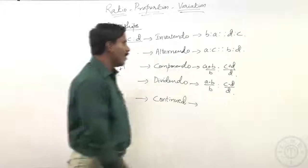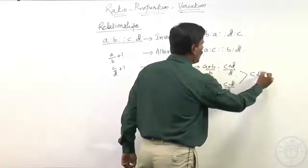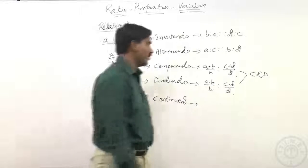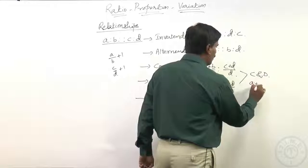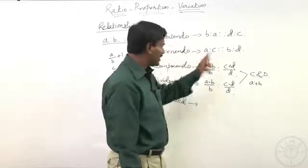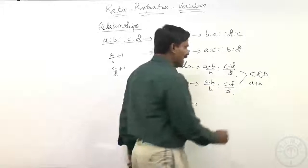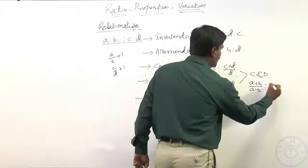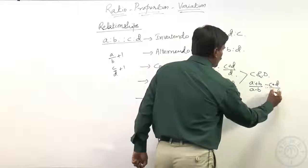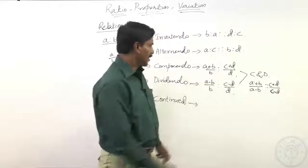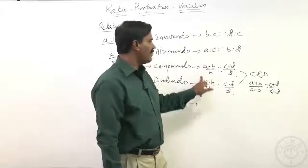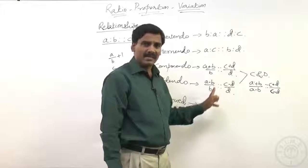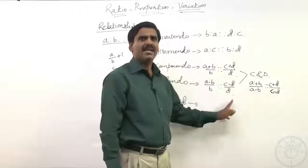We can go for a combination of these two to get componendo and dividendo. For two ratios a is to b and c is to d, componendo gives a plus b by b in proportion with c plus d by d, and dividendo gives a minus b by b in proportion with c minus d by d.